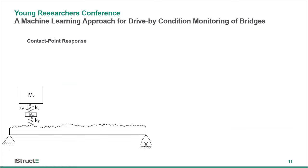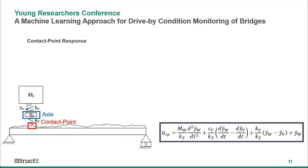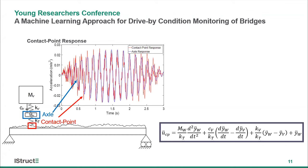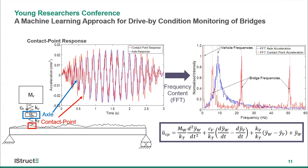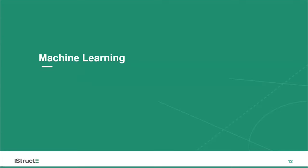Rather than looking at the response directly on the vehicle, I looked at the response at the point of contact between the tire and the bridge. Obviously it's not easy to measure at that point, but I developed a relationship that allows you to calculate or infer the contact point response purely from in-vehicle measurements when you have an understanding of some vehicle properties. Comparing the axle response to the contact point response in the frequency domain, you can see much more distinct peaks at the natural frequencies of the bridge and very little influence from the vehicle frequencies. This gives us a better way of understanding how the bridge is behaving — and this is where the machine learning comes in.